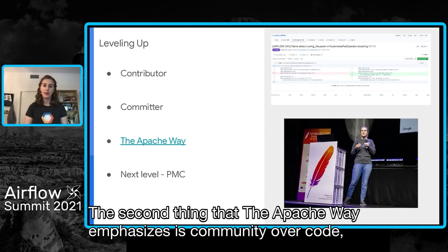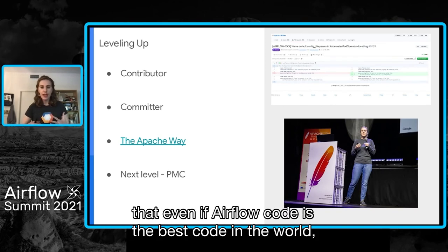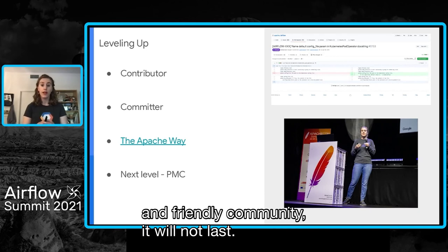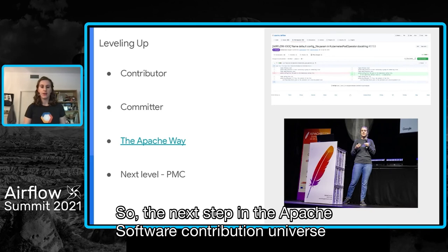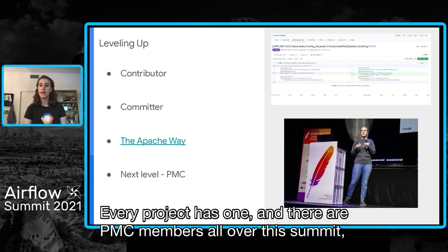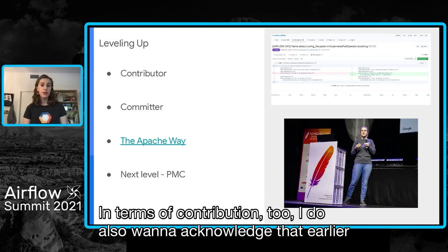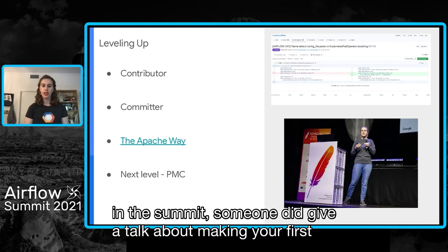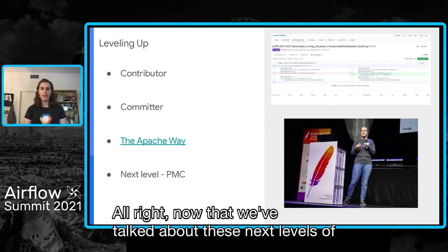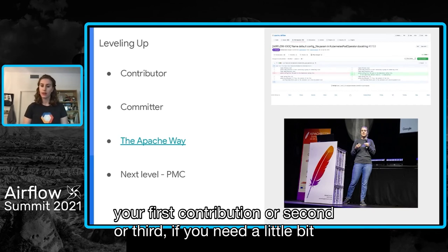The second thing the Apache Way emphasizes is community over code. In Airflow, I think it's wonderful because even if Airflow code is the best code in the world, if we don't continue to foster a healthy, welcoming, and friendly community, it will not last. The next step in the Apache software contribution universe is being a member of the PMC. I am not a member of the PMC, but every project has one and there are PMC members all over the summit — you should ask them what their experience is like. Also, earlier in the summit someone gave a talk about making your first contribution to Airflow, so check the schedule and watch the replay if you missed it.